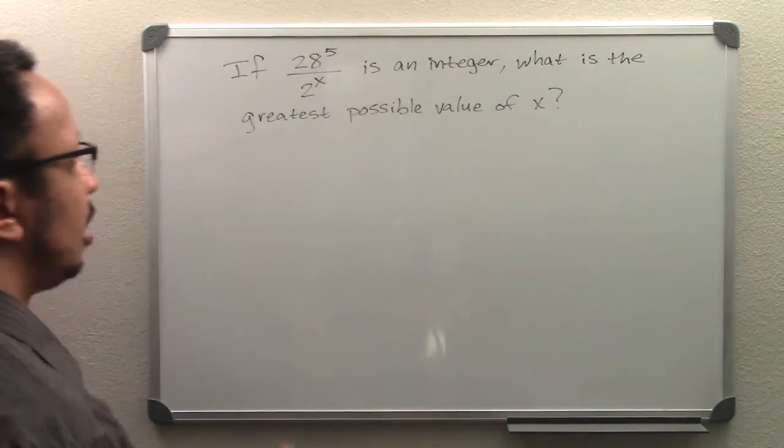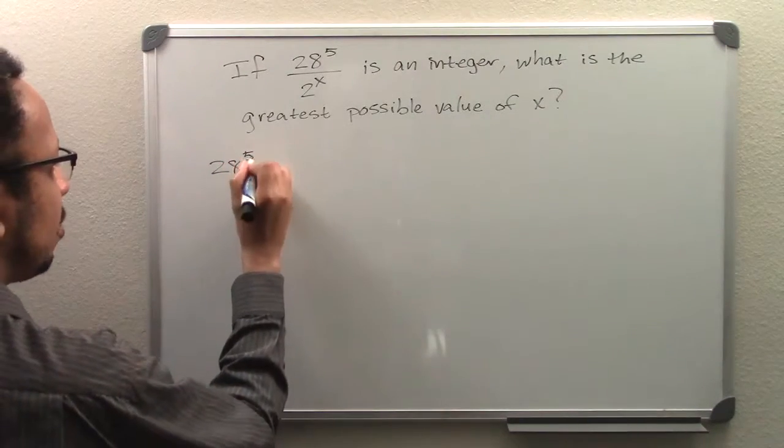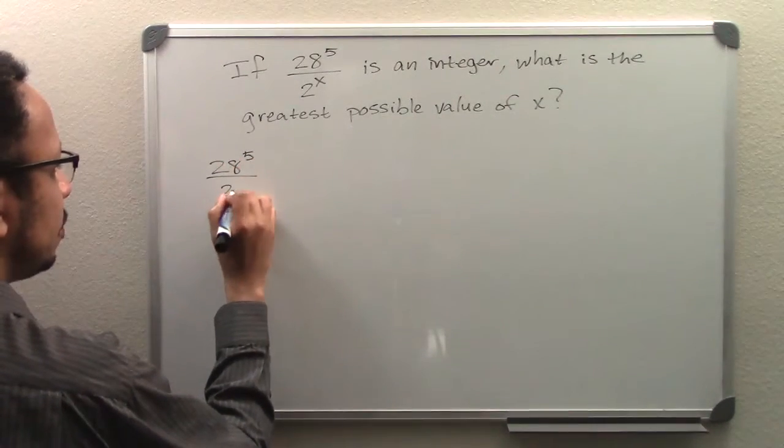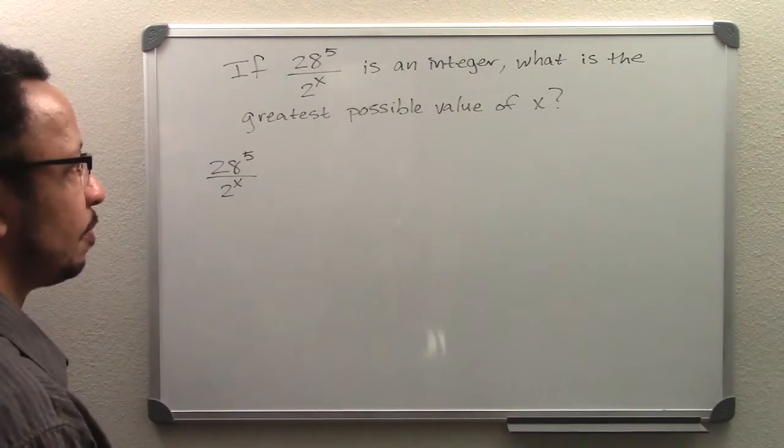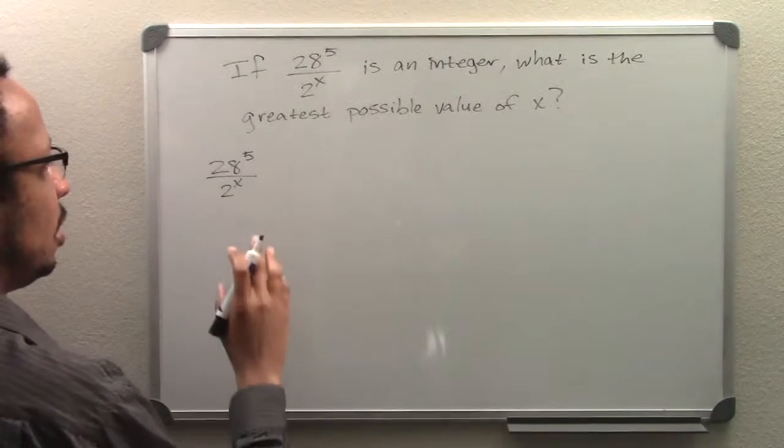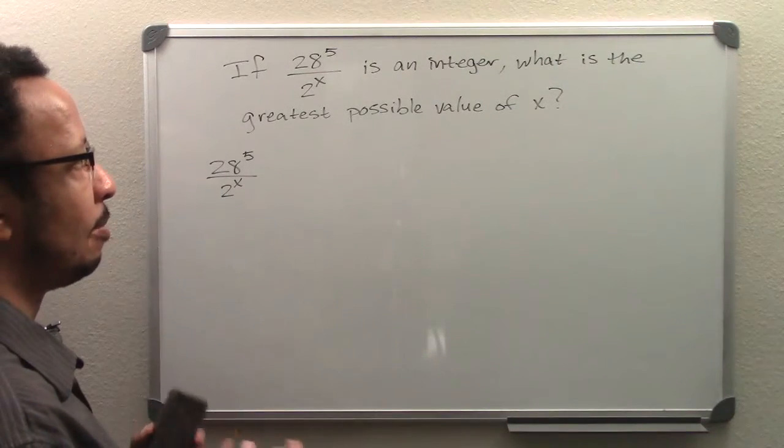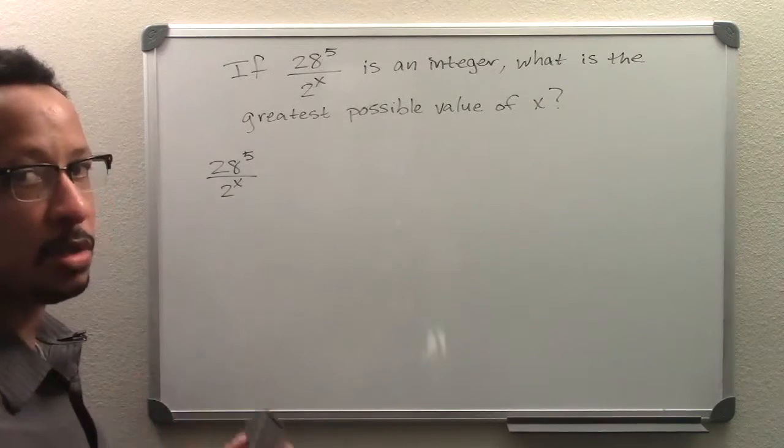I'll start by restating that over here: 28 to the power of 5 over 2 to the power of x. Now, in order for it to be an integer, it must divide out in such a way that we don't have a decimal that repeats or anything else like that.